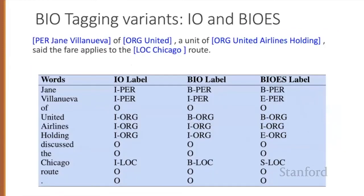There are variants of BIO tagging in which there's no B tag — that would be just IO labeling — so we have just one I tag for each named entity type and then an O tag. Or more complicated label schemes in which we have a begin and an end tag as well as an inside tag, or a special singleton tag for named entities that are single words.